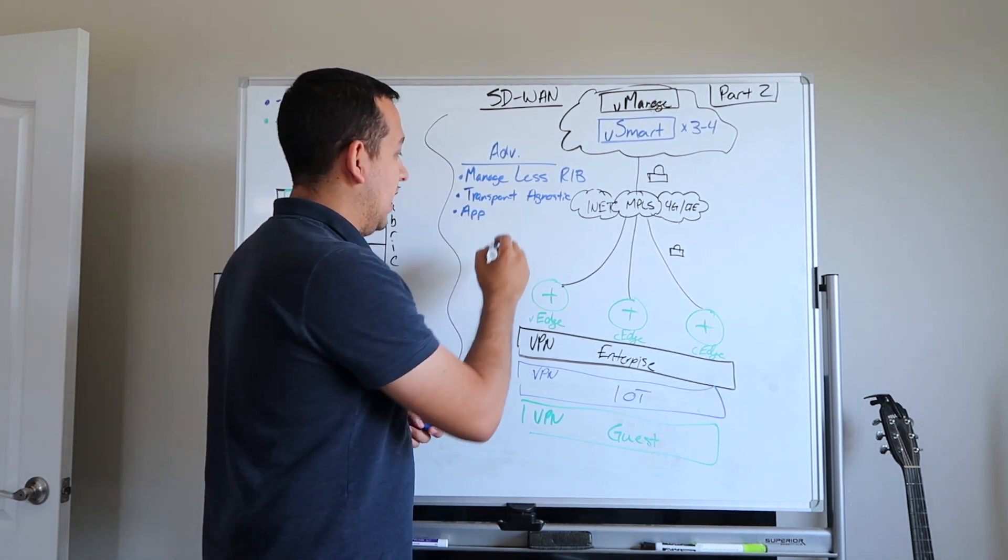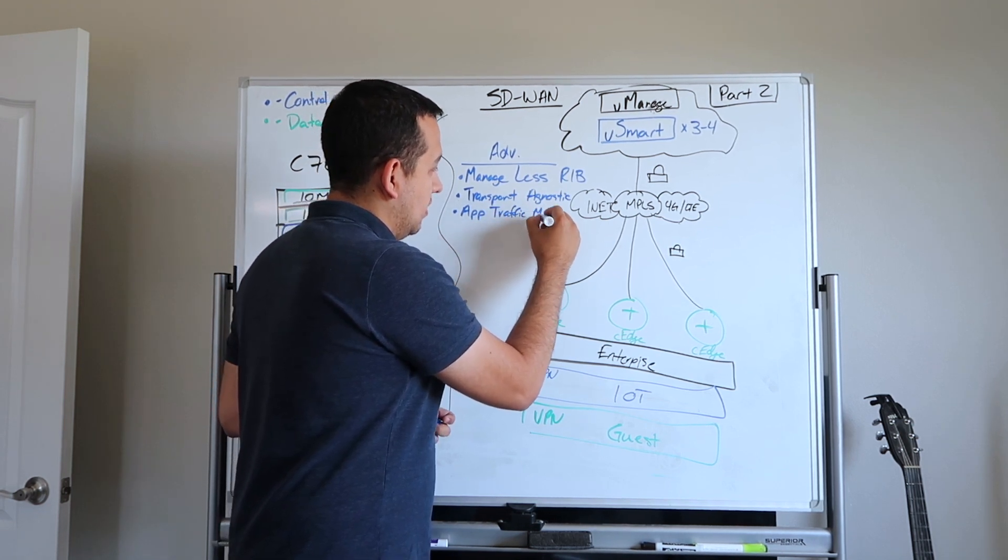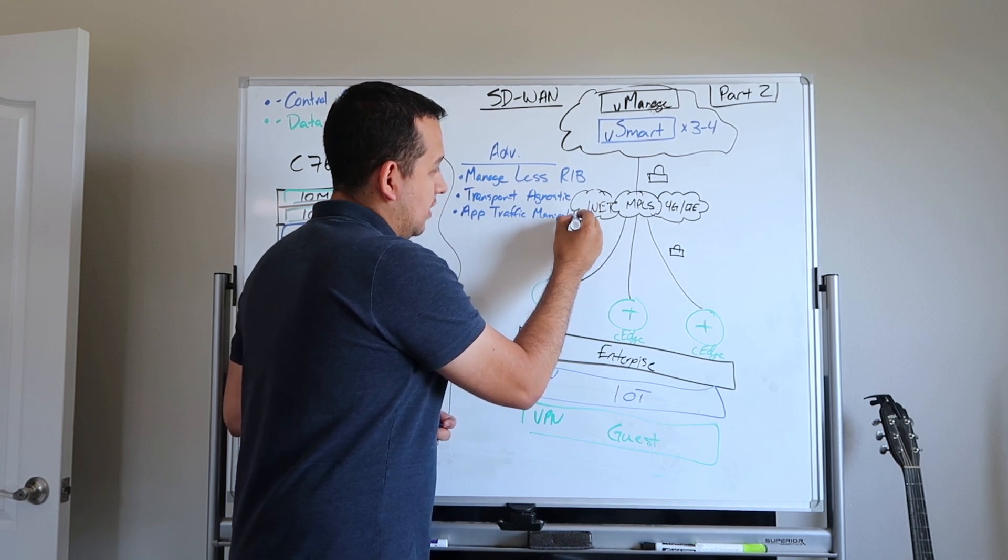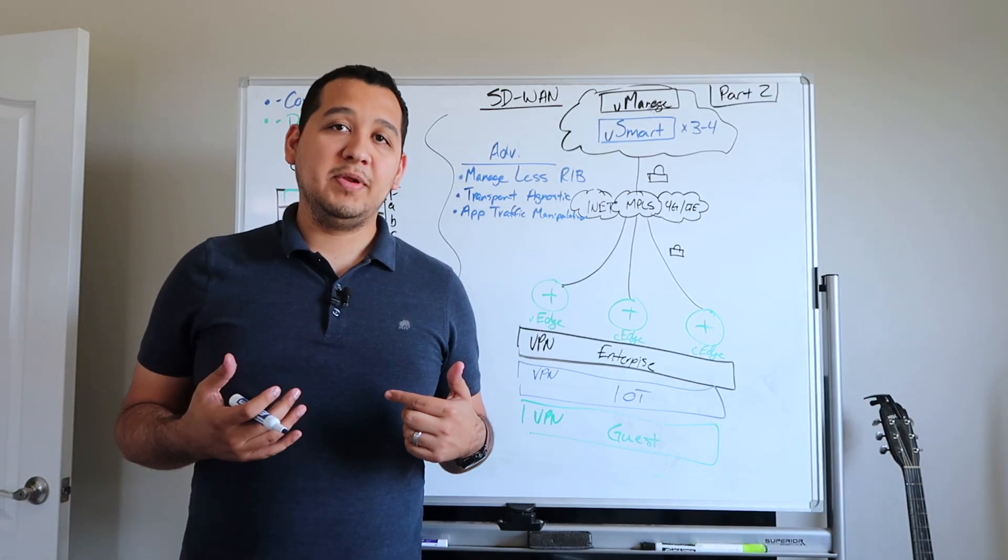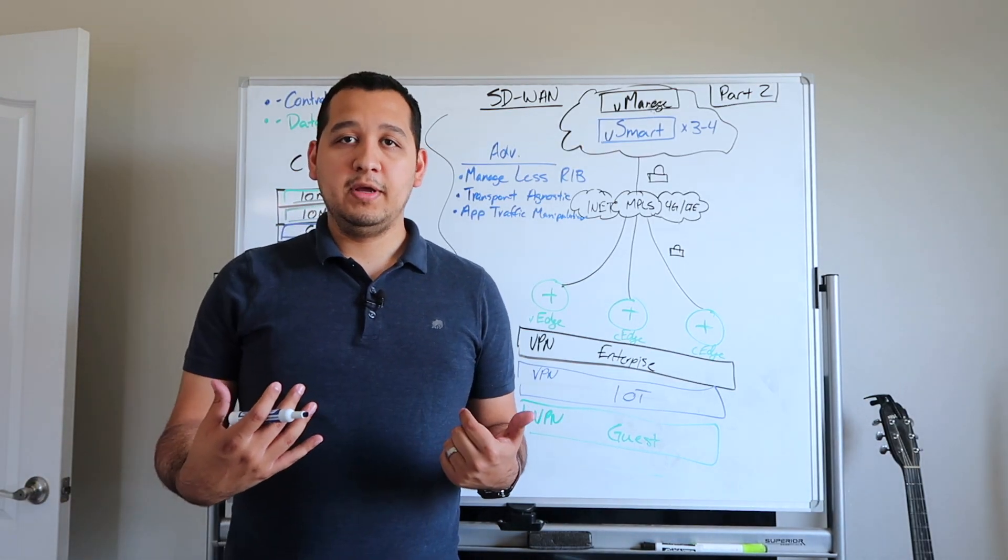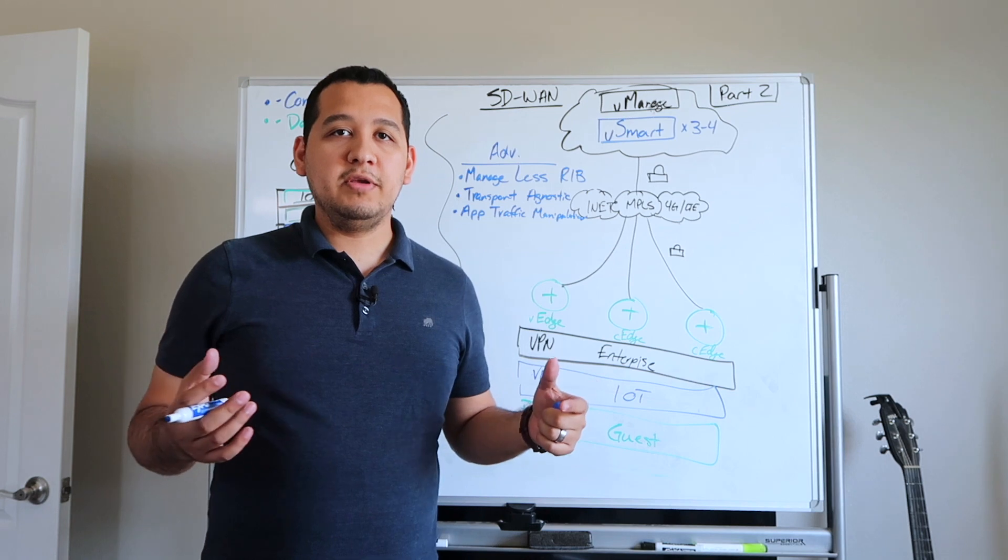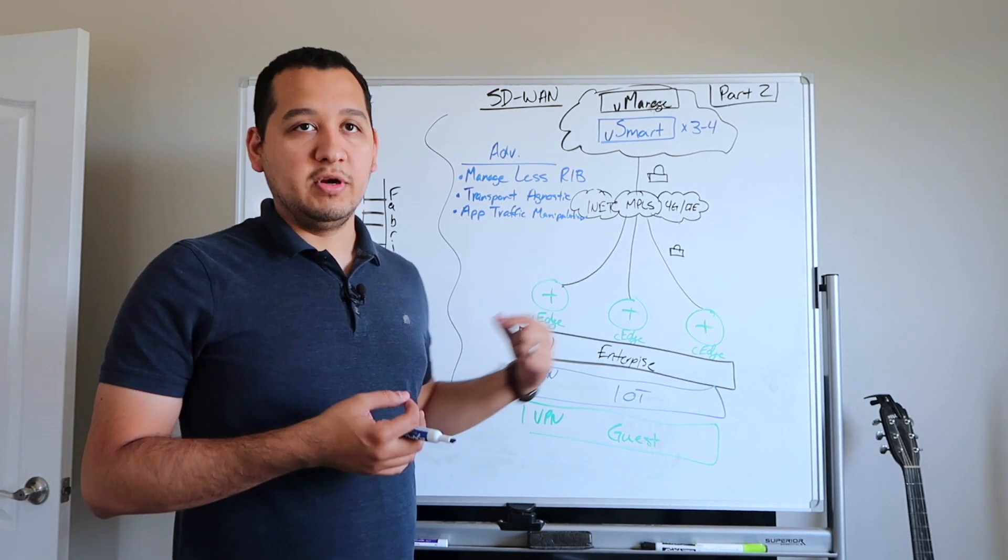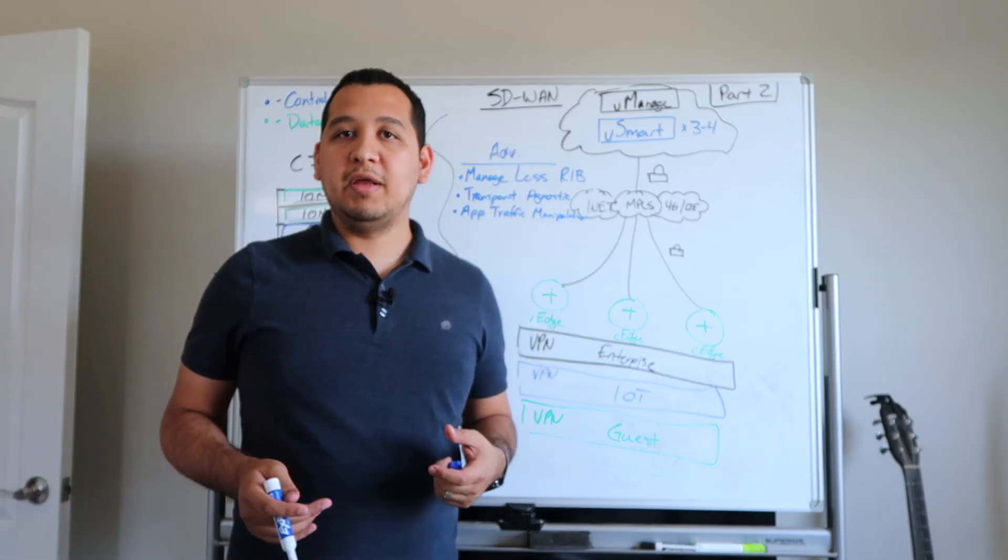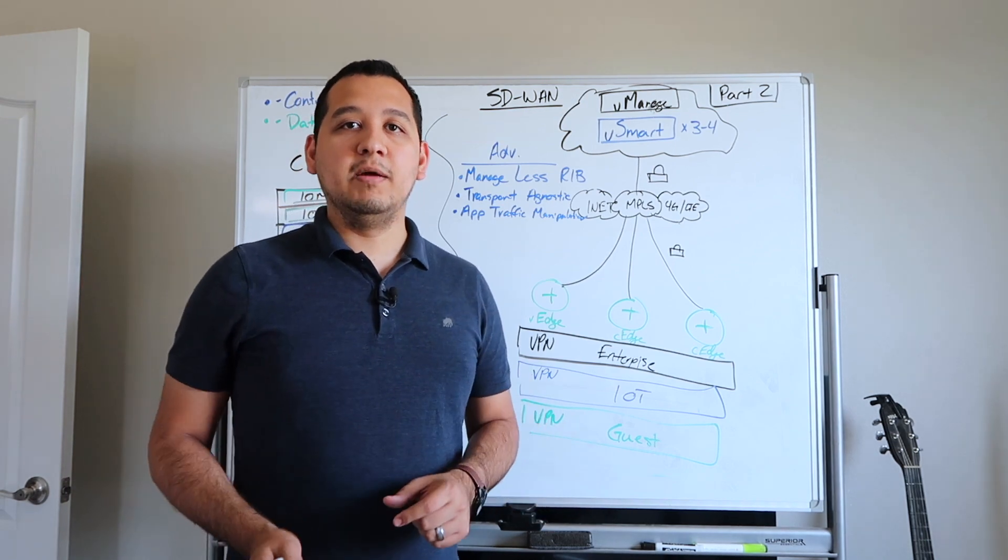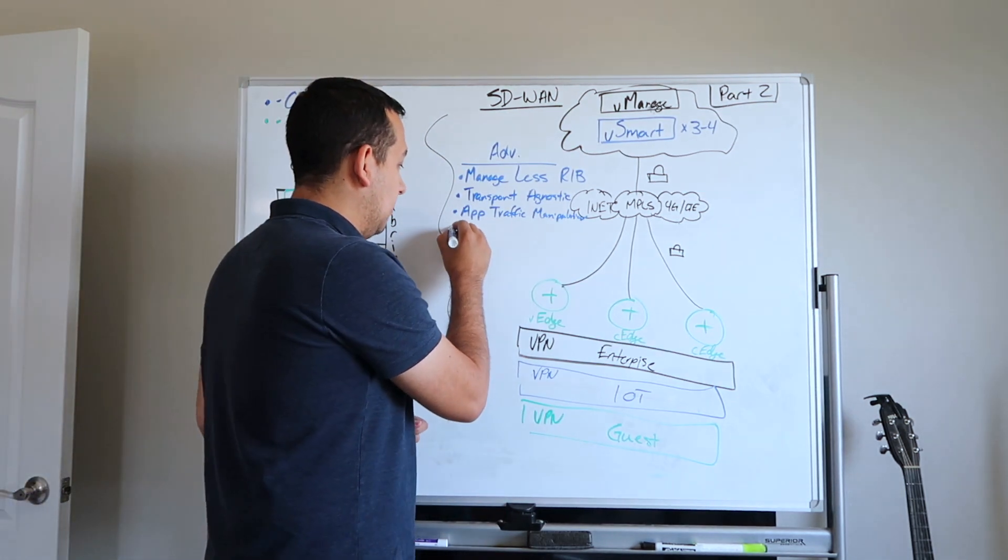We also have something I touched on in the last video - application traffic manipulation. Because you can use multiple transports, you can then select certain types of applications that may be run through the cloud to go straight out to the internet as opposed to running through your MPLS. This would allow you as an enterprise to save money on your MPLS or your dark fiber links and simply use the internet as a transport for applications that might exist in the cloud or maybe in AWS.